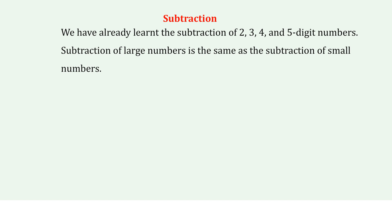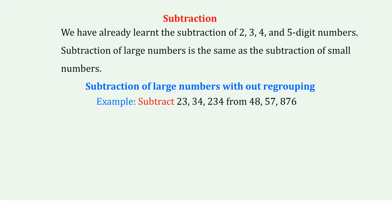Subtraction. We have already learnt the subtraction of 2, 3, 4, and 5 digit numbers. Subtraction of large numbers is the same as the subtraction of small numbers. Subtraction of large numbers without regrouping. Example: Subtract 23,03,034 from 48,05,876.